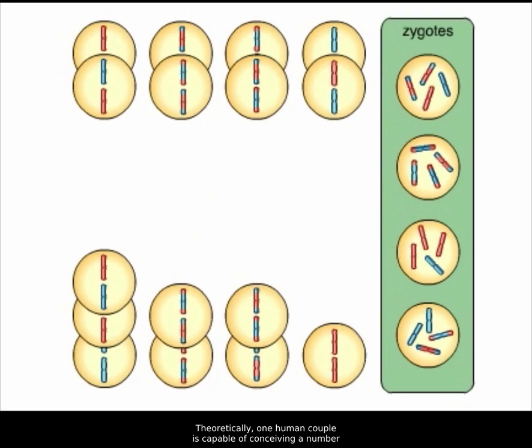Theoretically, one human couple is capable of conceiving a number of genetically different offspring that is far greater than the number of humans who have ever lived.